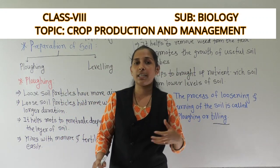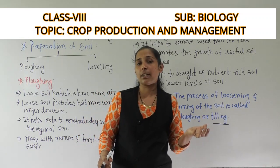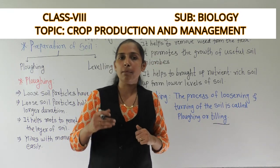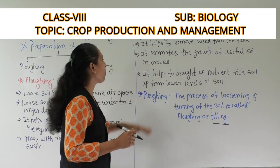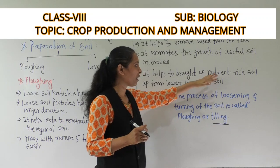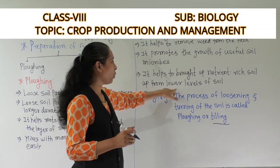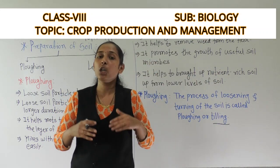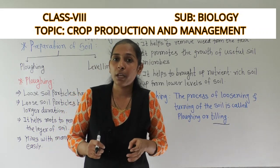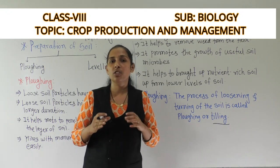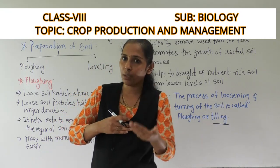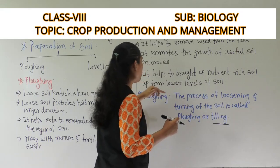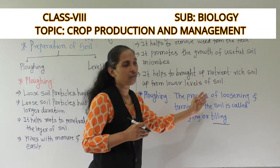Loosening also helps release certain types of humus present in the soil, making it more fertile. Seventh, plowing helps bring nutrient-rich soil up from the lower levels of soil. There are layers of soil which are rich in nutrients, and because of plowing, that nutrient-rich soil comes up to the surface.